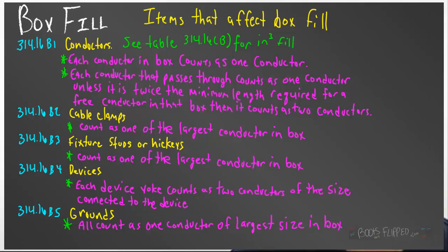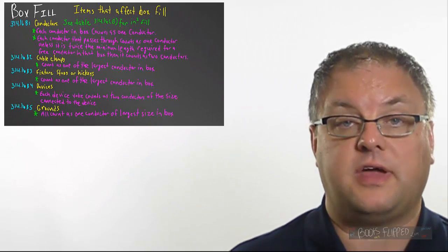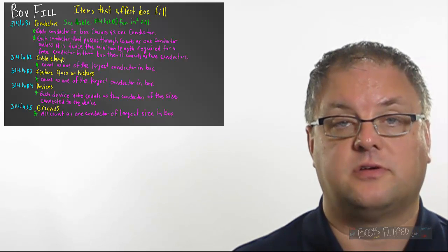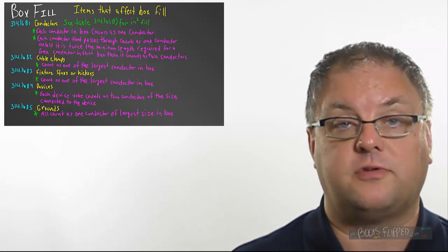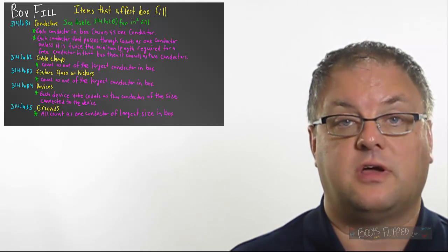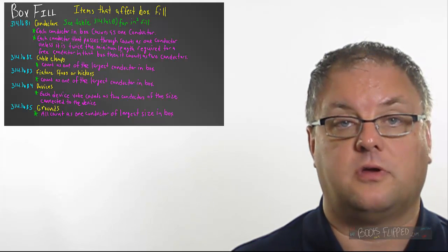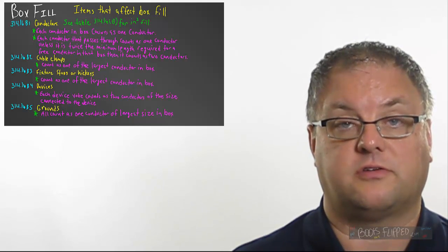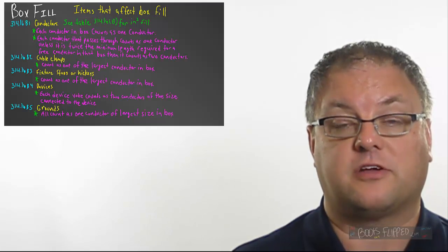In 314.16B4, then we talk about devices. And here's one that I want to make sure that you understand well. Every device counts as two conductors of the size of conductor that is connected to it. There are cases, especially in the kitchen, where you're going to have a number 14 conductor in a box and a number 12 conductor in the same box. And if your device has the number 14s connected to it, then that device counts as two number 14 wires. Your other device, if it has the number 12s connected to it, counts as two number 12 conductors. So, remember that when you're doing your box fill calculations.